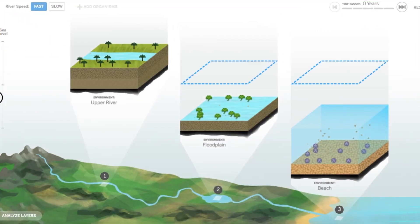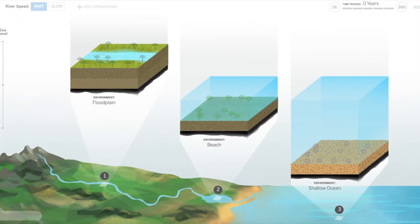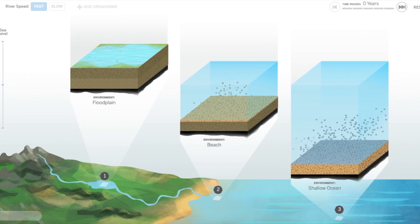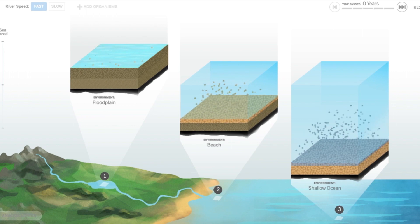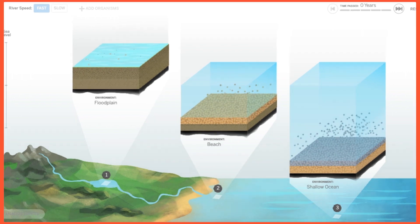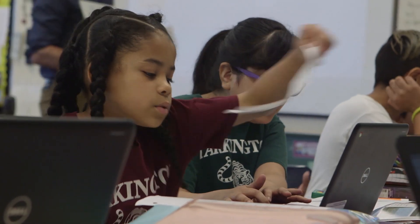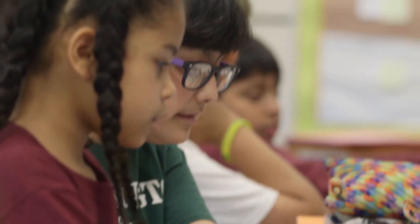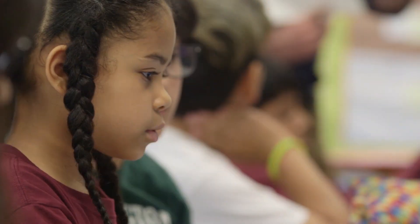Those things are very hard for students to understand without some kind of model that can break it down — either into a quicker speed if it's taking place over thousands of years, or a longer speed if it's taking place in a second.